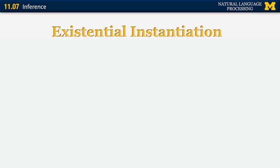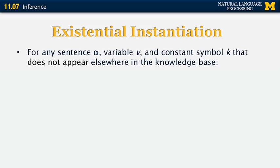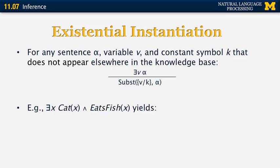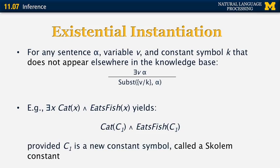Now an example of existential instantiation. For any sentence alpha, variable V, and constant symbol K that doesn't appear elsewhere in the knowledge base, if we know there exists a V for which alpha is true, we can infer that replacing V with constant K makes alpha true as well. For example, if there exists a cat X and X eats fish, we can represent this using a specific constant C1 — the one that exists — and claim that C1 is a cat and C1 eats fish. This special constant symbol is known in logic as a Skolem constant.